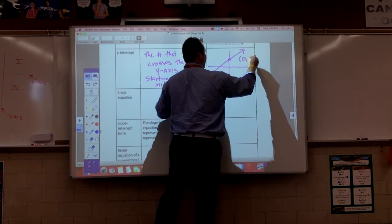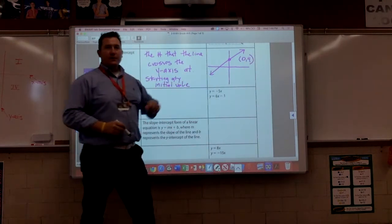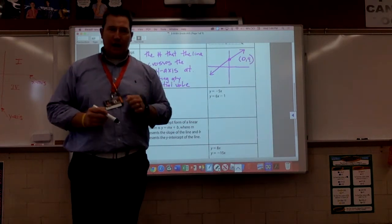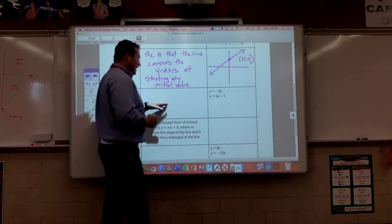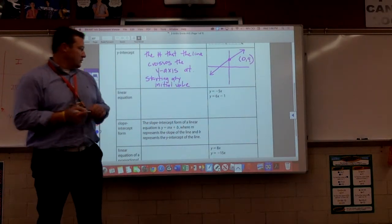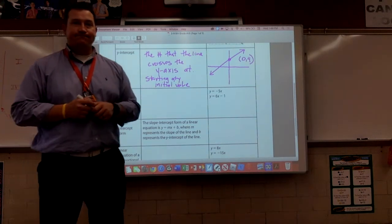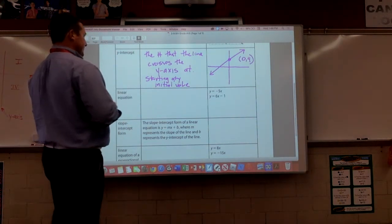And then this is the ordered pair, 0, 4. And 4 is my y-intercept. That's a good example. I like that. Yeah. That's a great example. 4.